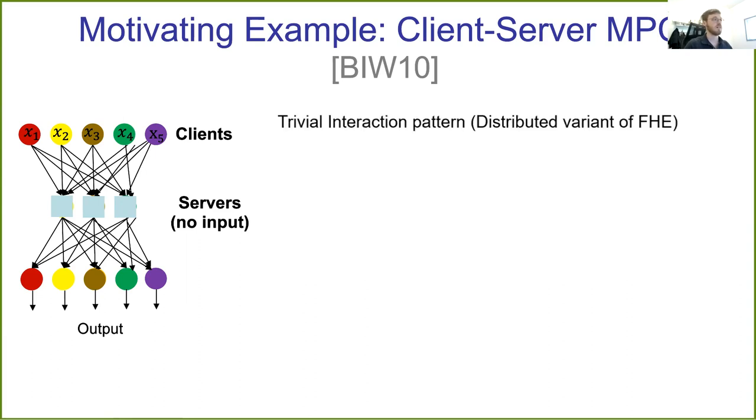The interaction pattern resembles a distributed variant of FHE. The protocol carries over in two rounds. In the first round, the clients send some message to servers. The servers then do some local computation and return results to the clients. And then the clients can receive their functionality's output.